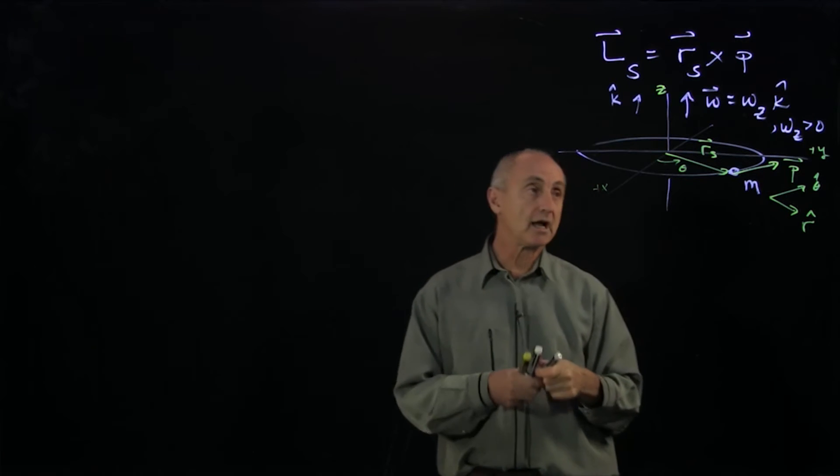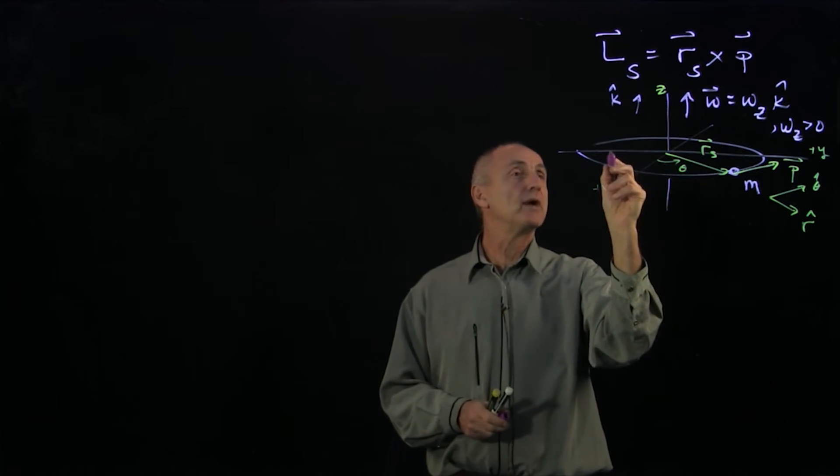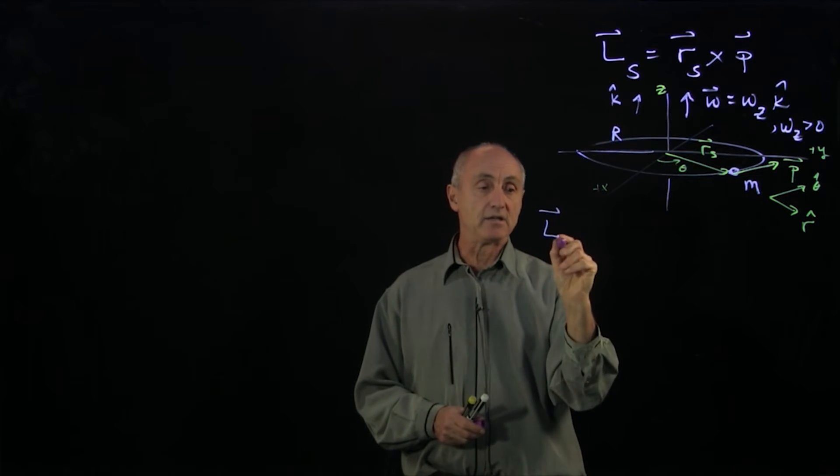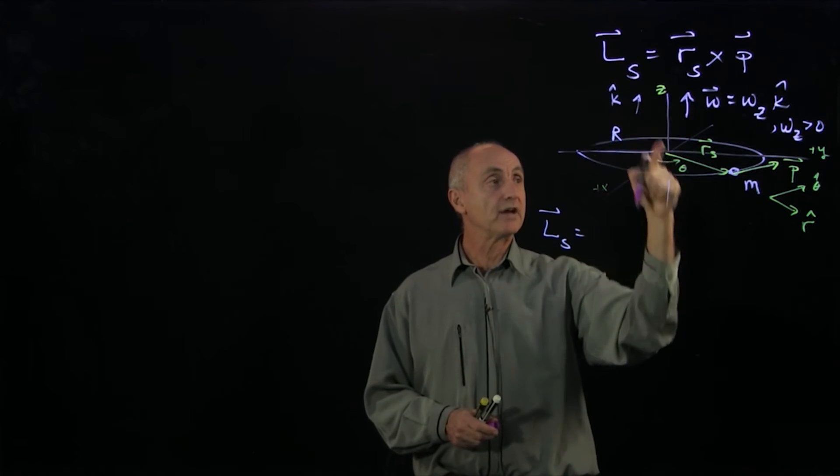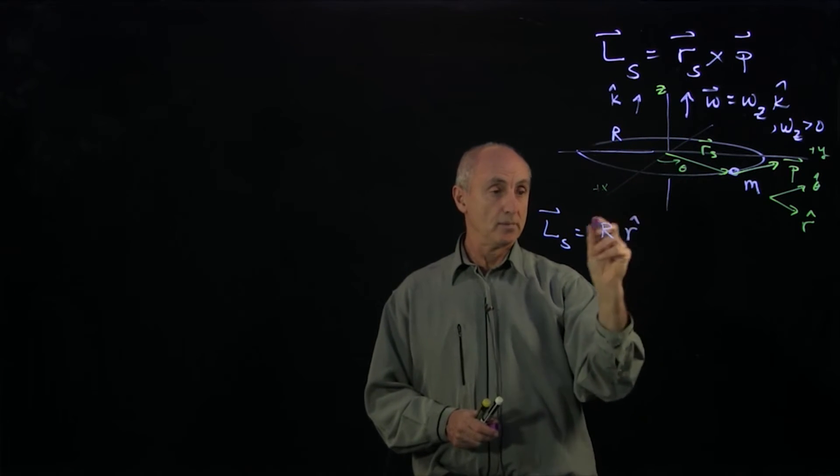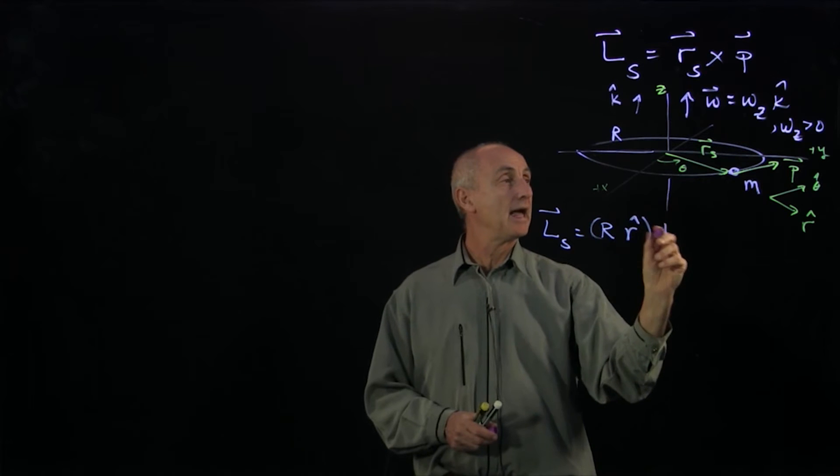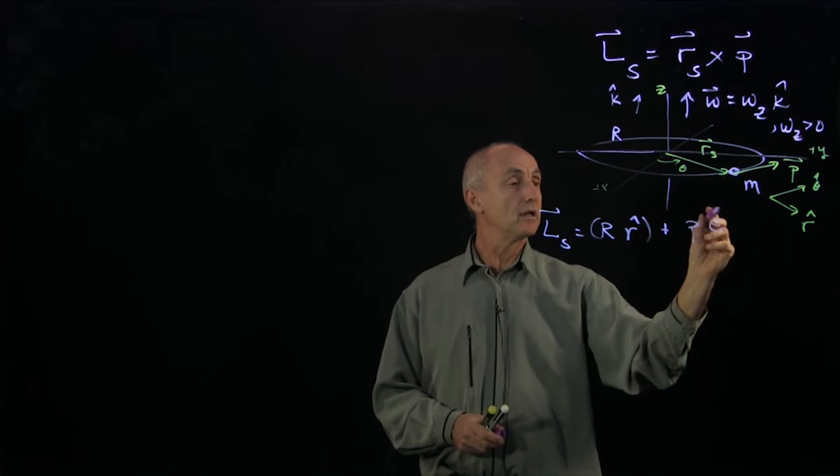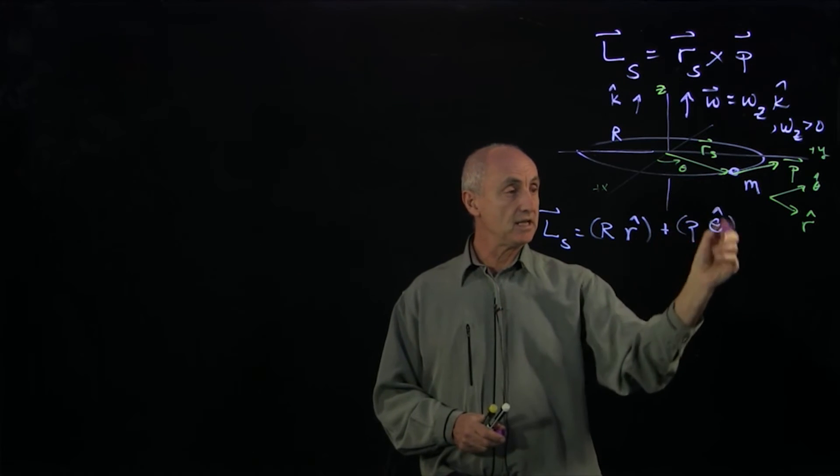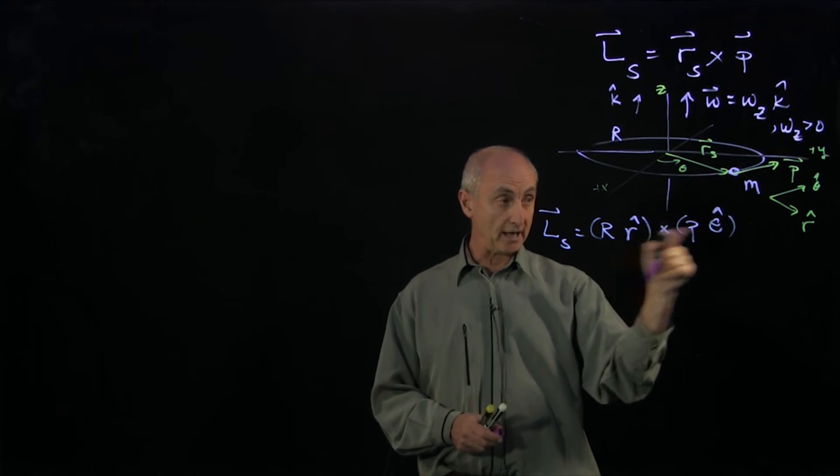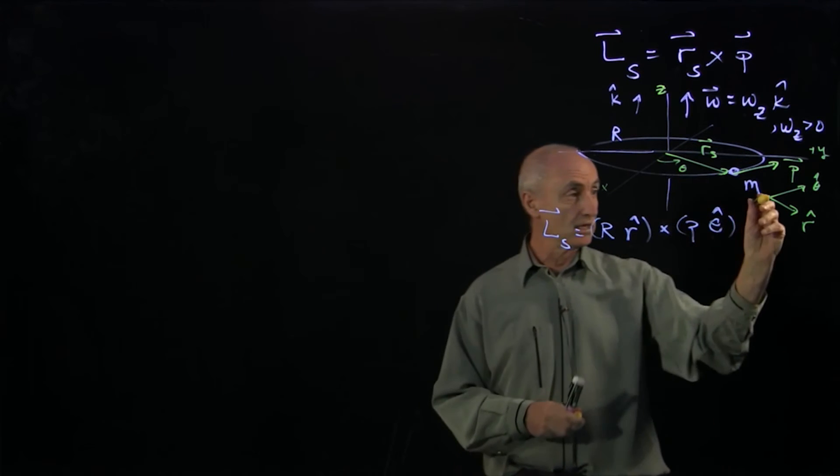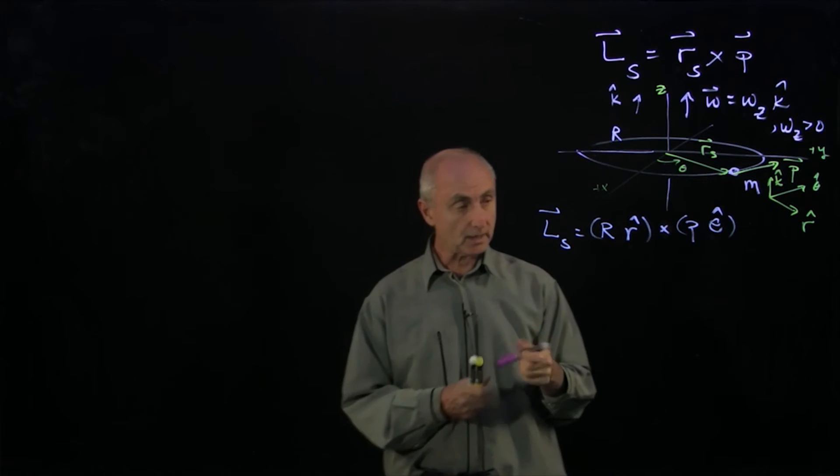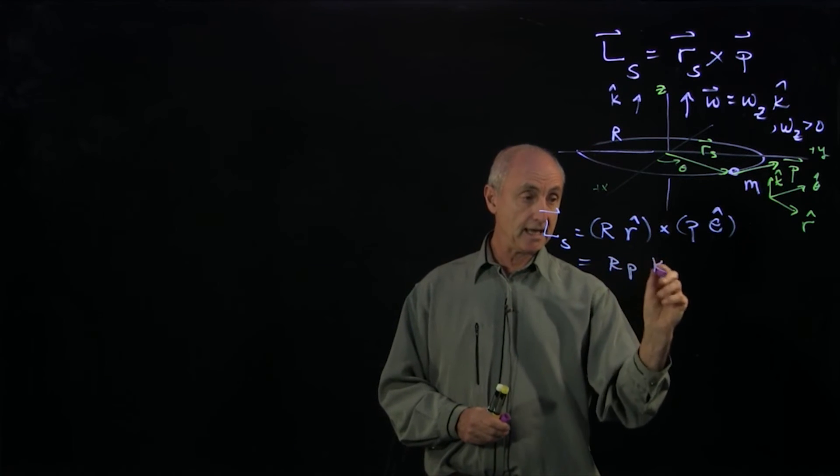Now I can calculate. Say the radius of the circle is r. Then L_s, the vector r_s has radius r pointing outward, and the momentum vector is pointing tangential. That's a very easy cross product to make, r-hat cross theta-hat. That's what we're defining to be k-hat, maintaining the cyclic order. So we get r p k-hat.